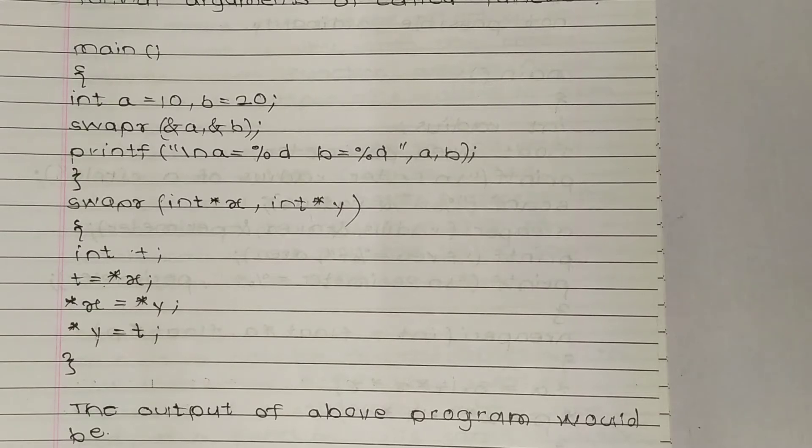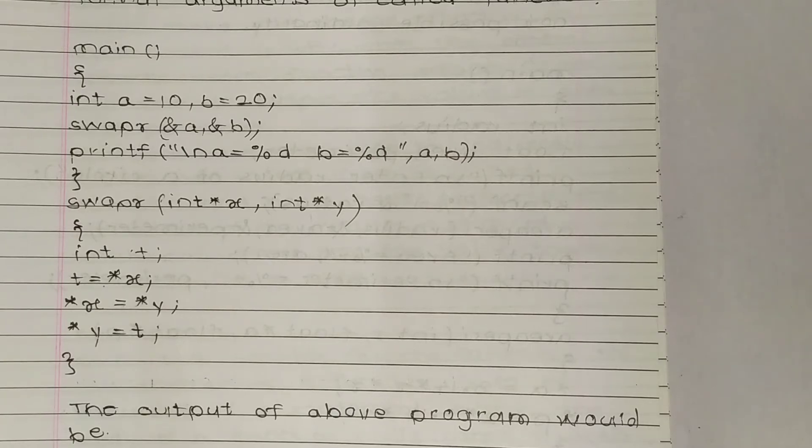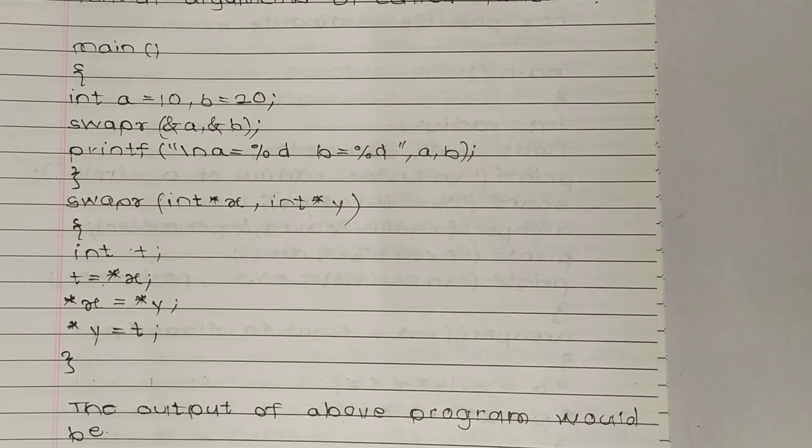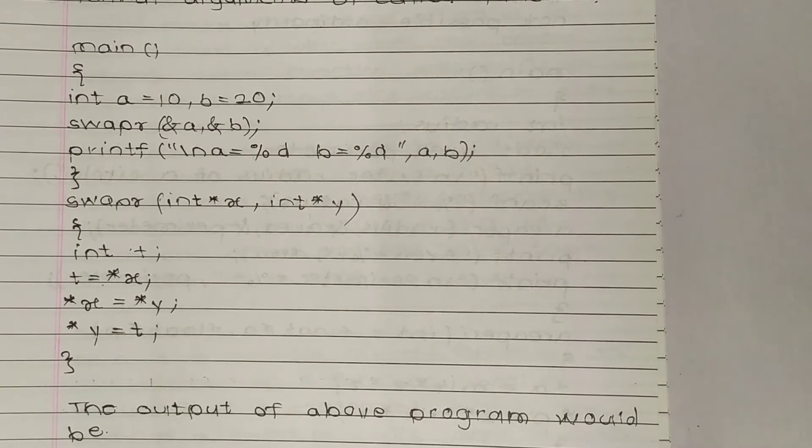Int t - t is an integer variable. We define int t. Then t = *x, so we are temporarily storing the value at address x in t. Then *x = *y.